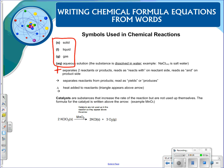Plus signs are going to be used to separate two reactants or products. We are going to read them as reacts with on the reactant side and reads as and on the product side.